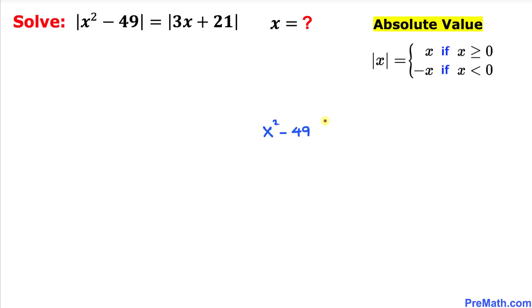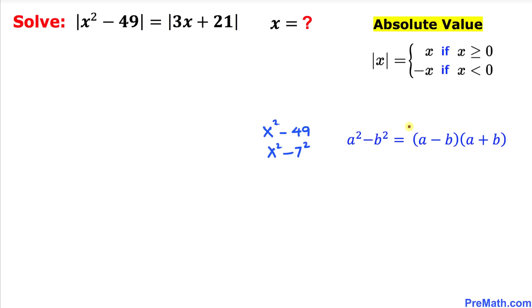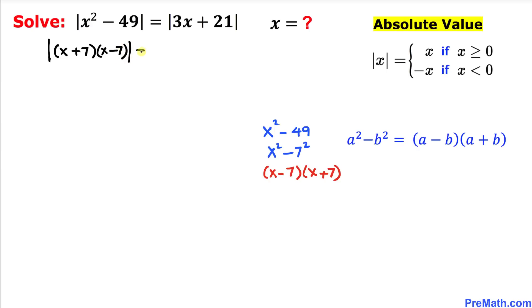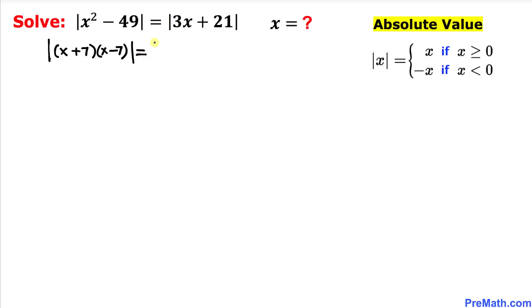Now let's focus on x squared minus 49. We can write 49 as 7 squared, so this becomes x squared minus 7 squared, which is a difference of two squares. Using the identity a squared minus b squared, this factors as (x minus 7)(x plus 7). So the left-hand side becomes the absolute value of (x plus 7)(x minus 7). On the right-hand side, 3 is a common factor, so we write the absolute value of 3 times (x plus 7).